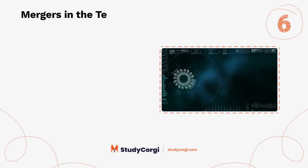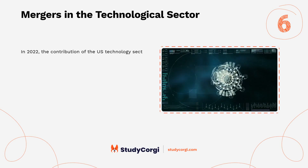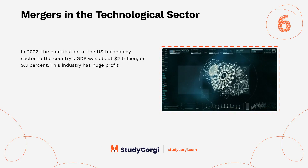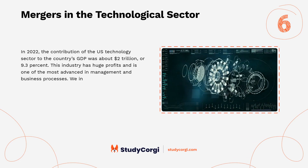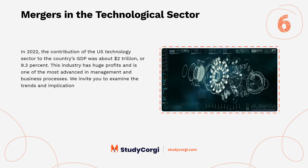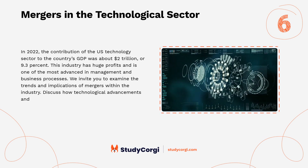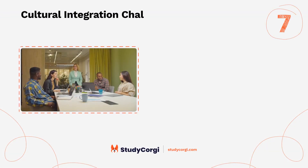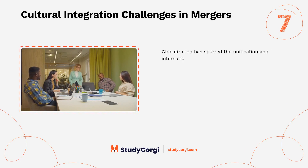Mergers in the technological sector. In 2022, the contribution of the U.S. technology sector to the country's GDP was about two trillion dollars, or 9.3 percent. This industry has huge profits and is one of the most advanced in management and business processes. Examine the trends and implications of mergers within the industry, and discuss how technological advancements and innovation impact merger strategies.